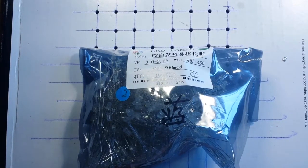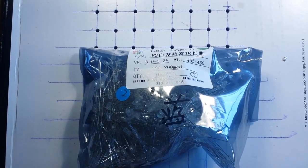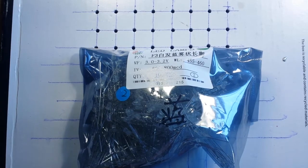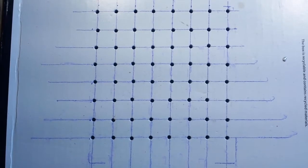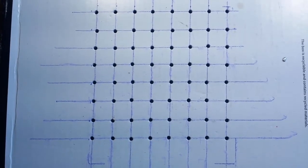All right, welcome back guys. This is part three of the LED cube build, and today we're going to get started soldering up one of these eight grids that we have to build.